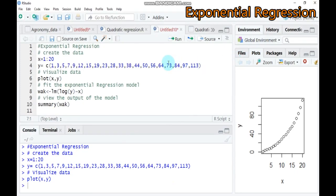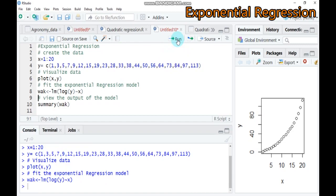The next step is to fit the exponential regression model. You can give any name that you want. I'll name this object 'wak'. Use lm, and we can use the lm function to fit an exponential regression model using the natural log of y as a response variable and x as the predictor variable. Type this and run. It will give you something.